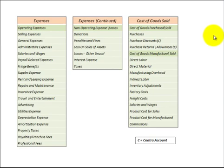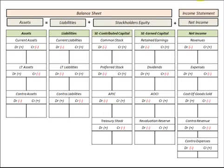So this is your chart of accounts — I give you three pages on that. Going back and looking at the template again: you've got the balance sheet and the income statement, and under those the headings — assets, liabilities, stockholders equity, and net income — with what's included under each one.